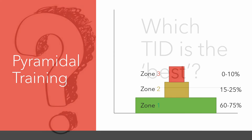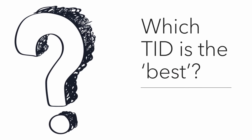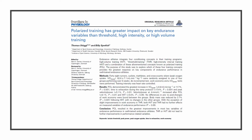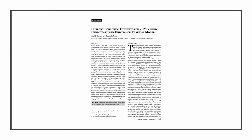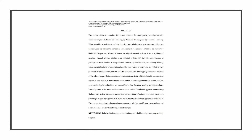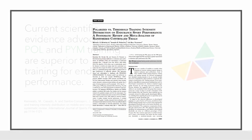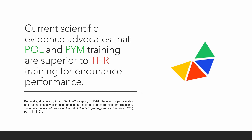But which of these 3 methods is the best? After a whole lot of reading through the scientific evidence, there appears to be a growing consensus. However, it must be admitted that the amount of research on this topic is rather scarce, so we look forward to what future science has to tell us to help continue this discussion. The current consensus so far is that polarised and pyramidal training are superior to threshold training for endurance performance.